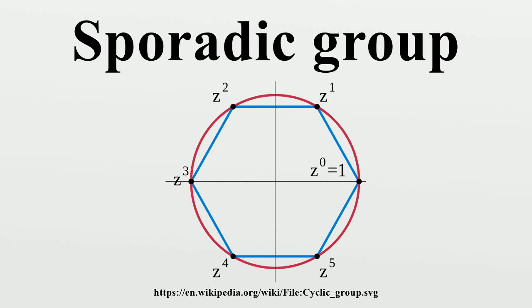In group theory, a discipline within mathematics, a sporadic group is one of the 26 exceptional groups found in the classification of finite simple groups.